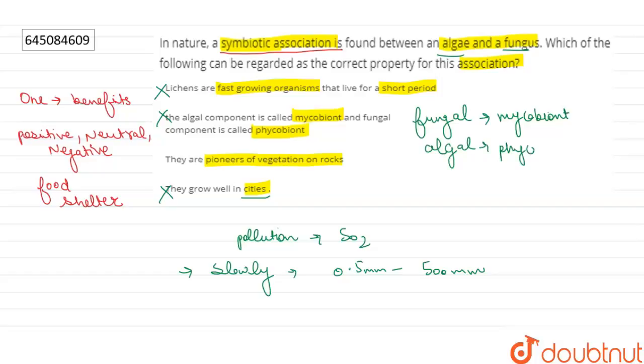So this statement is also wrong. Now if we talk about the third statement, pioneer means the first organism that colonizes an area. Lichens are the first organisms that start life on a newly exposed rock surface.